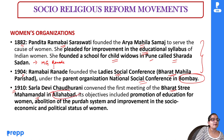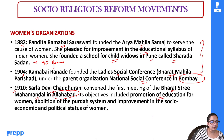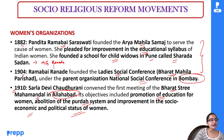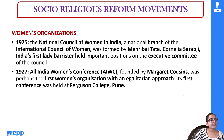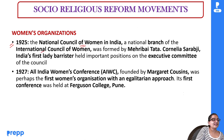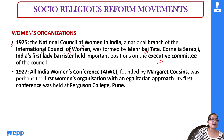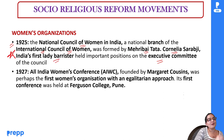Bharat Stree Mahamandal's objectives included promoting women's education, removing the purdah system, and discussing socio-economic and political rights for women. In 1925, the National Council of Women in India was established — a branch of the International Council of Women — founded by Mehribai Tata, with Cornelia Sorabji, India's first lady barrister, sitting on its executive committee.